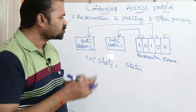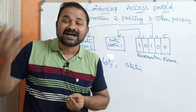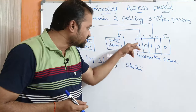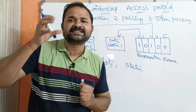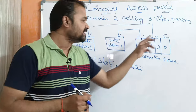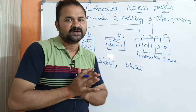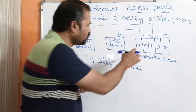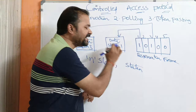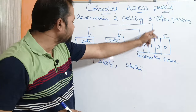Each station will have information about the other stations which are interested in sending frames. Station one knows that station three is interested to send a frame, and station three knows that station one is interested to send a frame, so there is no collision. Station one can send the data first, then station three can send the data.